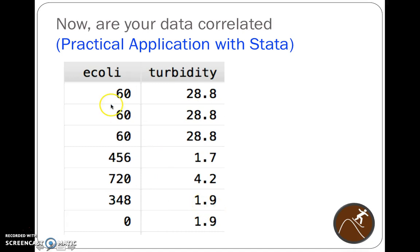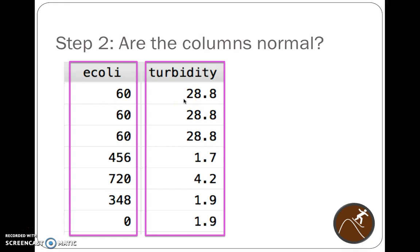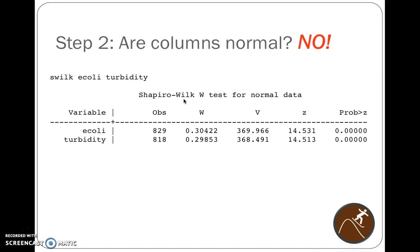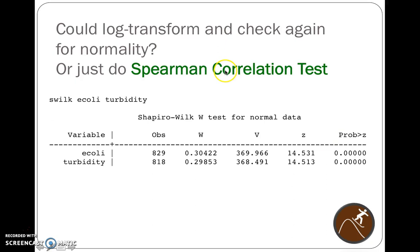We want to see if the E. coli data are correlated with turbidity. First, are the columns normal? We do a Shapiro-Wilk test: 829 E. coli observations — low p-value; turbidity, 818 observations — all suggesting big departures from normality. So the columns are not normal. We cannot use Pearson; we have to use a different type of correlation. These p-values on the normality test suggest the data are significantly different from normal, so we have to conclude they're nonparametric. The alternative test to Pearson correlation is Spearman.